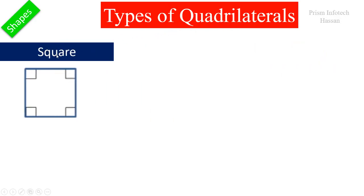First one is a square. In this shape, all sides are equal, and along with that all angles are right angles, so this is called a square.